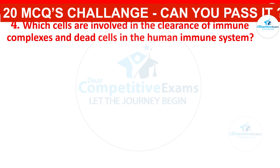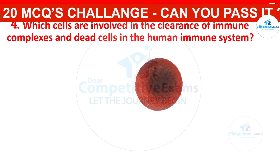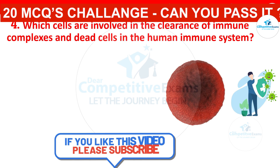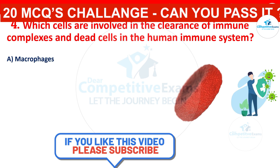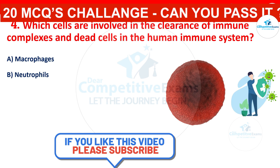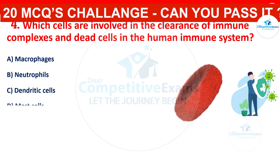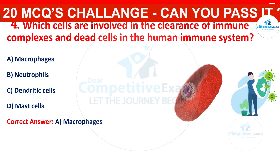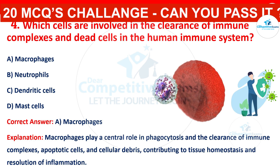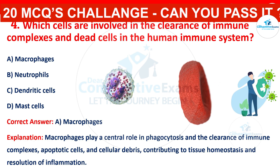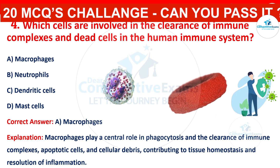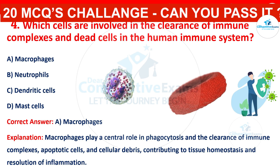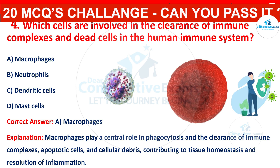Which cells are involved in the clearance of immune complexes and dead cells in the human immune system? The correct answer is macrophages. Macrophages play a central role in phagocytosis and the clearance of immune complexes, apoptotic cells, and cellular debris, contributing to tissue homeostasis and resolution of inflammation.